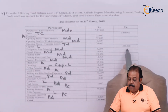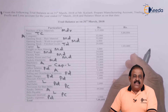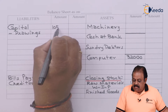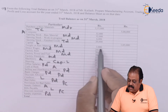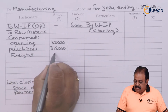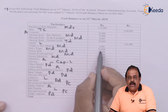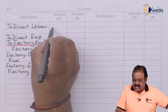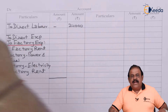Capital of proprietor 1,05,000 — recorded in balance sheet on liability side as first item. Freight on raw material 3,000 — manufacturing account debit, under raw material consumed, freight 3,000. Direct wages 24,000 — manufacturing account debit, direct labor or direct wages 24,000.